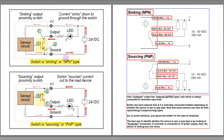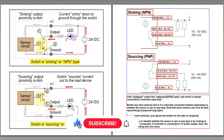Since this is a sinking or NPN type switch, the E emitter is internally connected to the negative V or ground wiring. The C or collector output is always connected to the load. The load can be anything — a PLC input, an electronic recorder, or any controller — as long as it has resistance, it is a load.